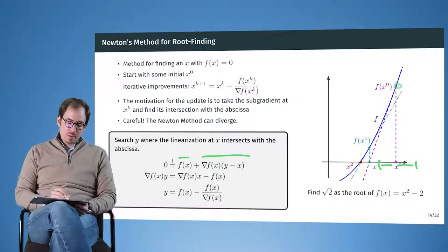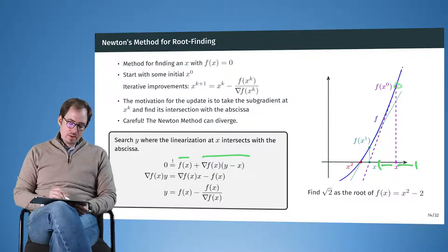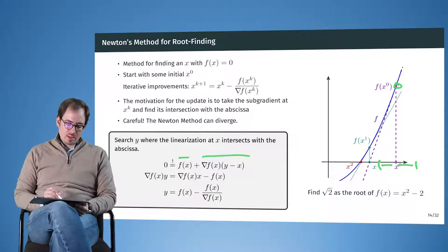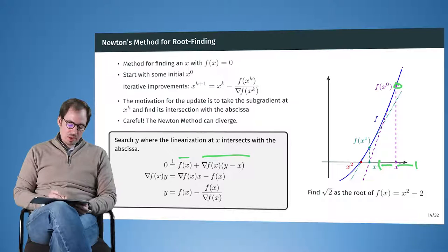And we want this to be zero. And now we can switch around, we can move the grad f of x times y over to the other side and simplify a little bit and we get back this expression. So the next point that we are selecting where the sub-gradient becomes zero, so this epsilon is selected as f of x minus f of x divided by the gradient f at x.